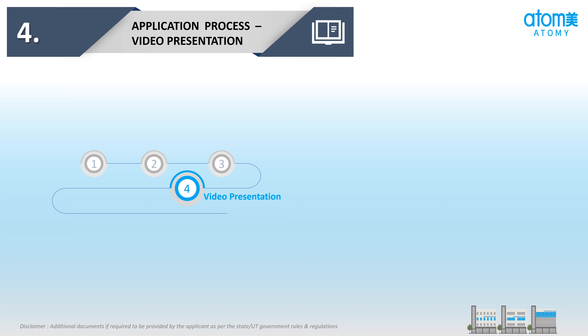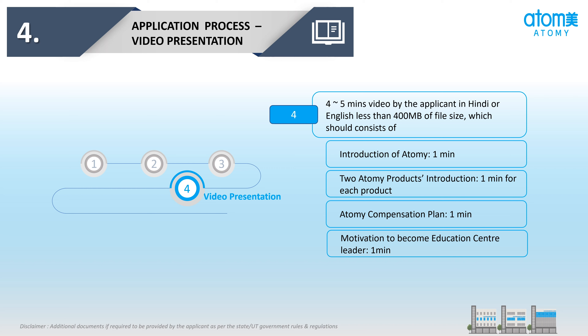चौथा Stage है Video Presentation। Applicant को 4-5 मिनिट की Video Hindi और English में बनानी होगी जो 400 MB File Size से कम होनी चाहिए। Topics इस प्रकार होंगे: Introduction of Atomy केवल 1 मिनिट में, Atomy के Products का Introduction 1 मिनिट हर एक Product के लिए, Atomy Compensation Plan केवल 1 मिनिट में, और Motivation to become Education Center Leader केवल 1 मिनिट में।